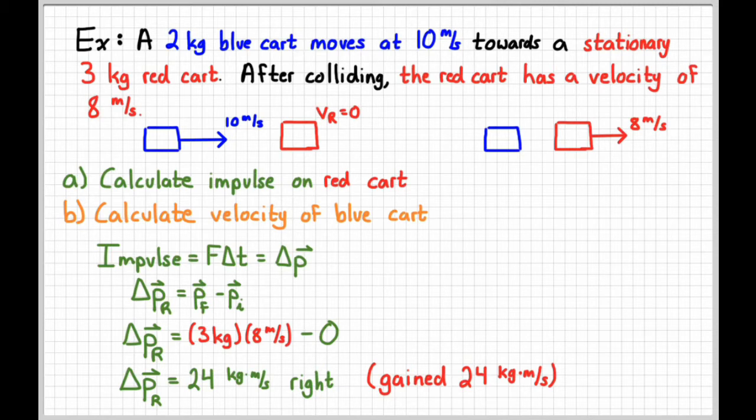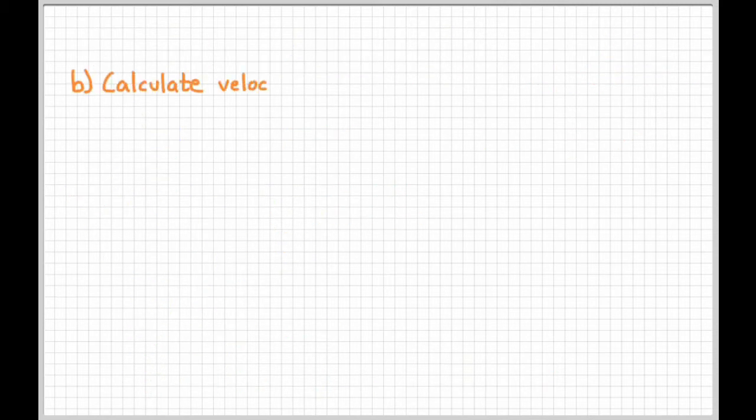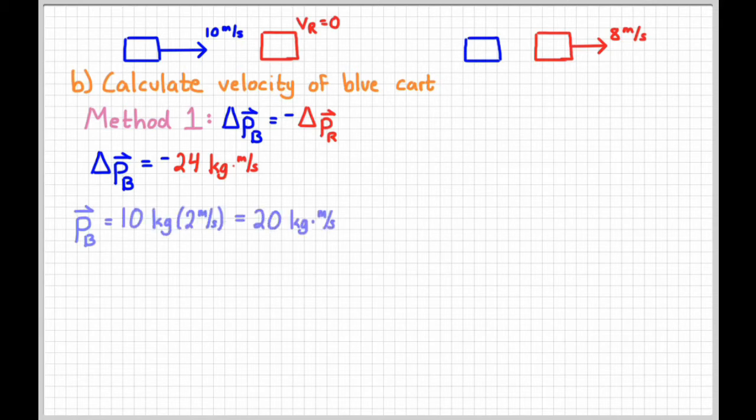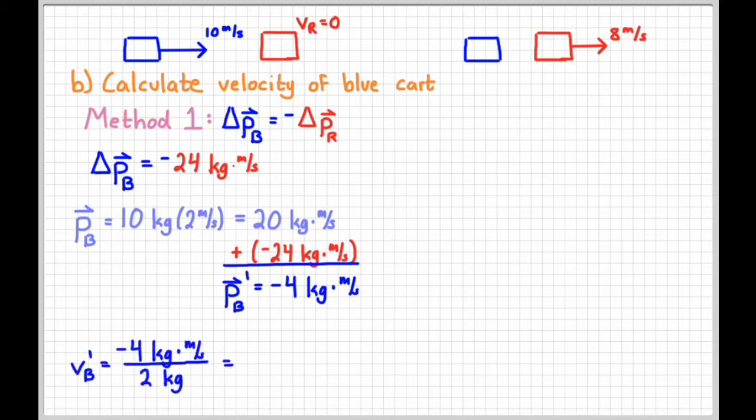When we find the velocity of the blue cart, there's a couple different ways we could do that as well. First, we could just use the fact that the momentum change of the blue cart has to be the opposite of the momentum change of the red cart. So the Δp for blue has to be negative Δp of the red. Since the red cart gained 24 marks, the blue cart must have lost 24 marks. The original momentum of the blue cart was 20 marks. If I then add negative 24 marks to that, that leaves me with a final momentum of negative 4 marks. Dividing that momentum by a mass would give me the velocity, negative two meters per second. We need to clearly indicate that that's two meters per second to the left.